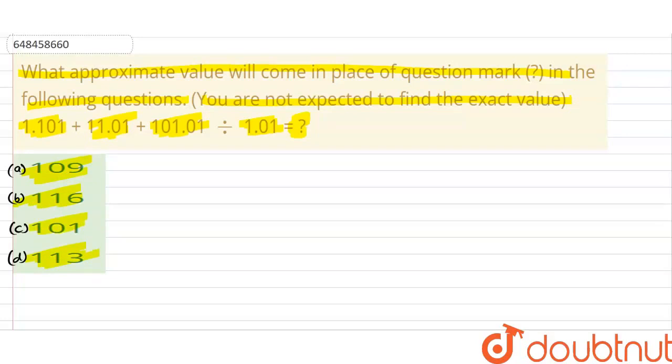So let's solve it. First, the question says we only need to find the approximate value. So let's write the approximate value of each. 1.101 approximate will be? 1. Plus 11.01 approximate will be?